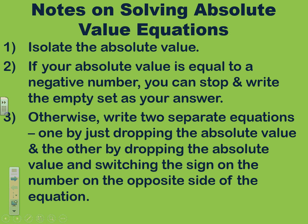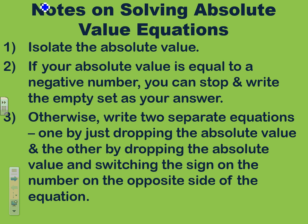First, look to see if the absolute value equals a negative number. If it does, we can stop, because it's impossible for an absolute value to produce a negative number. Absolute value is a distance on a number line, and distances can never be negative. Otherwise, we separate the equation into two parts: one keeping the positive value and one changing it to negative.